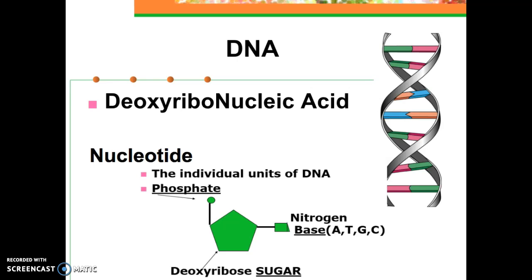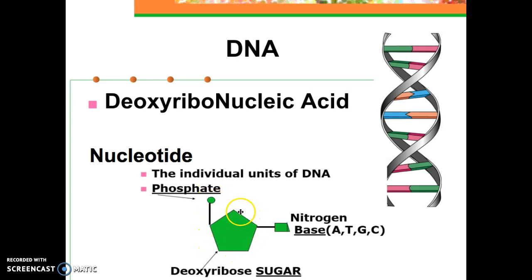DNA stands for deoxyribonucleic acid. A nucleotide is the building block of DNA. It has three parts: a phosphate group, a sugar, which is the deoxyribose sugar, and a nitrogen-containing base. The base is adenine, thymine, guanine, or cytosine — each contains nitrogen. So we have phosphate, sugar, and base.